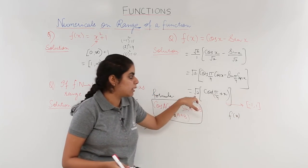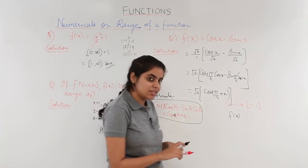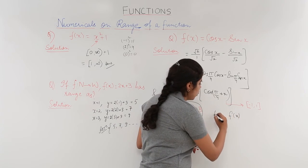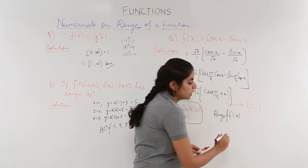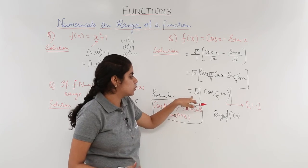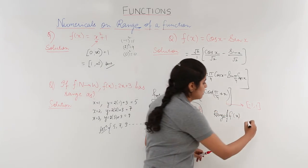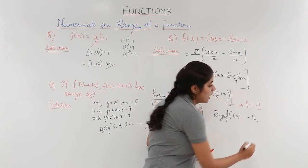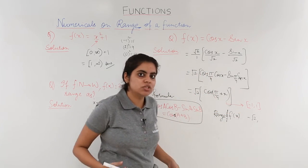I know that cos x, or cos of any angle, has the range as minus 1 to 1 only. This bracket has the range as minus 1 to 1, but for this bracket, if the range is minus 1 to 1, what if I multiply by root 2? So my answer changes. The range of f(x) becomes root 2 into minus 1, which is minus root 2, and root 2 into plus 1, which is plus root 2.